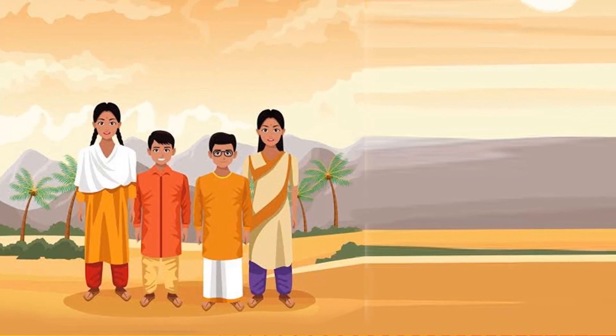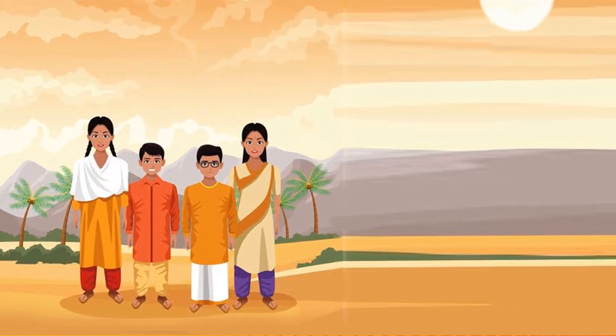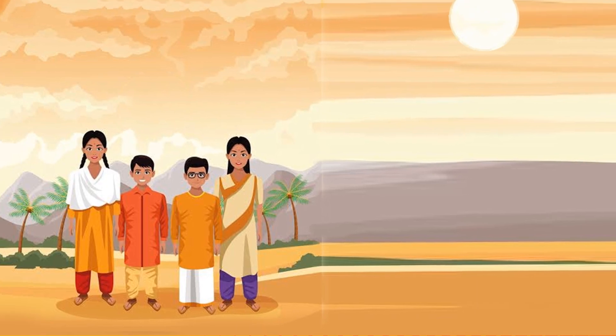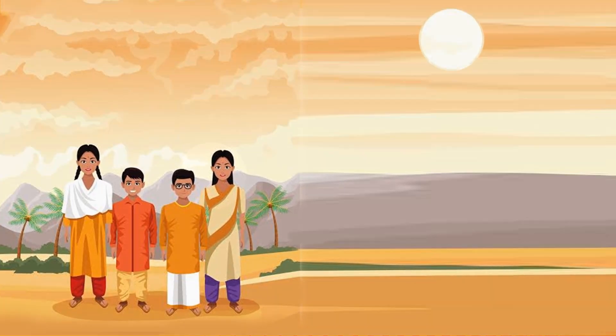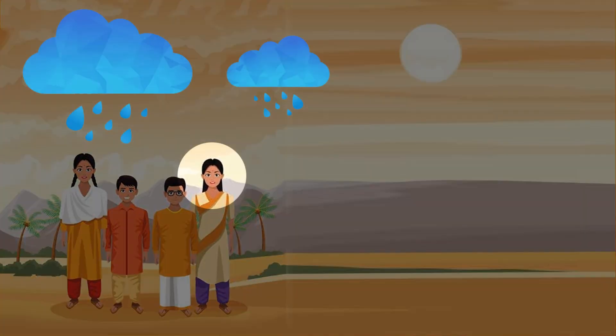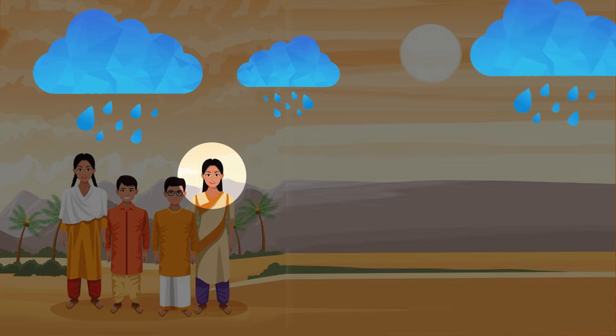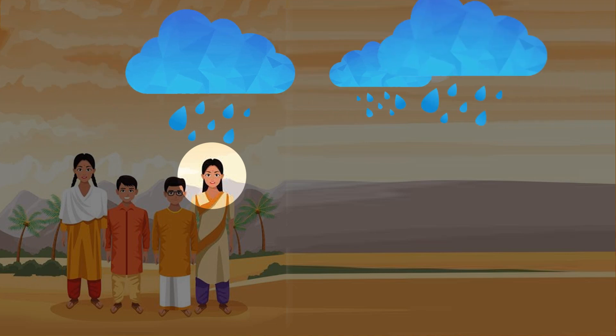I am Rubeya. I am in Meghalaya. Here the rains just don't stop. The sun is hiding behind dark clouds.